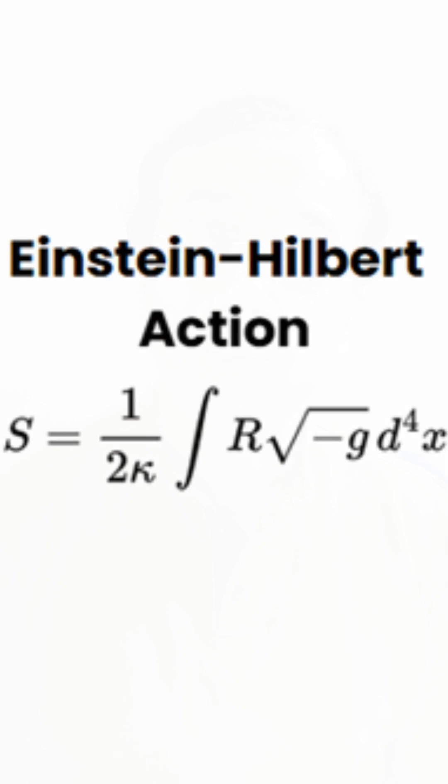So if you have a small area in spacetime, Einstein field equations work out. But what about a global strategy? What about extending the Einstein field equation to quantum gravity or string theory? This is where Einstein Hilbert action plays a significant role.